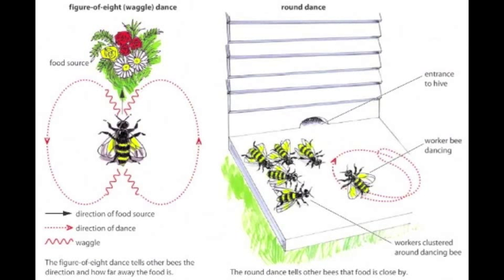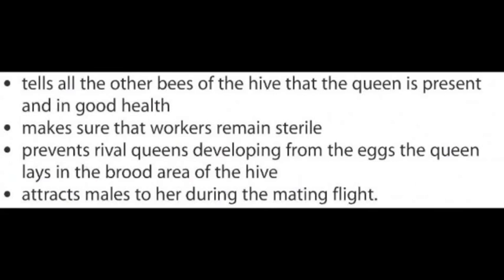Honeybees can also use pheromones to communicate. For example, the queen produces a pheromone called queen bee substance, which passes to workers when they touch her with their mouthparts. The queen substance tells all the other bees that the queen is present and in good health, ensures that workers remain sterile, and prevents rival queens from developing from the eggs the queen lays in the brood area of the hive.